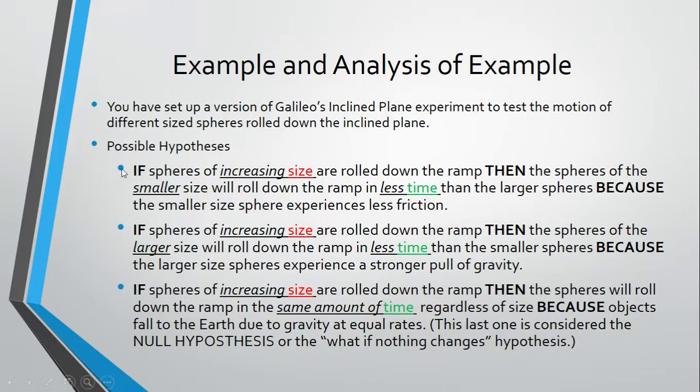So take a look at the very first hypothesis. If spheres of increasing size are rolled down the ramp, then the spheres of the smaller size will roll down the ramp in less time than the larger spheres, because the smaller size spheres experience less friction.